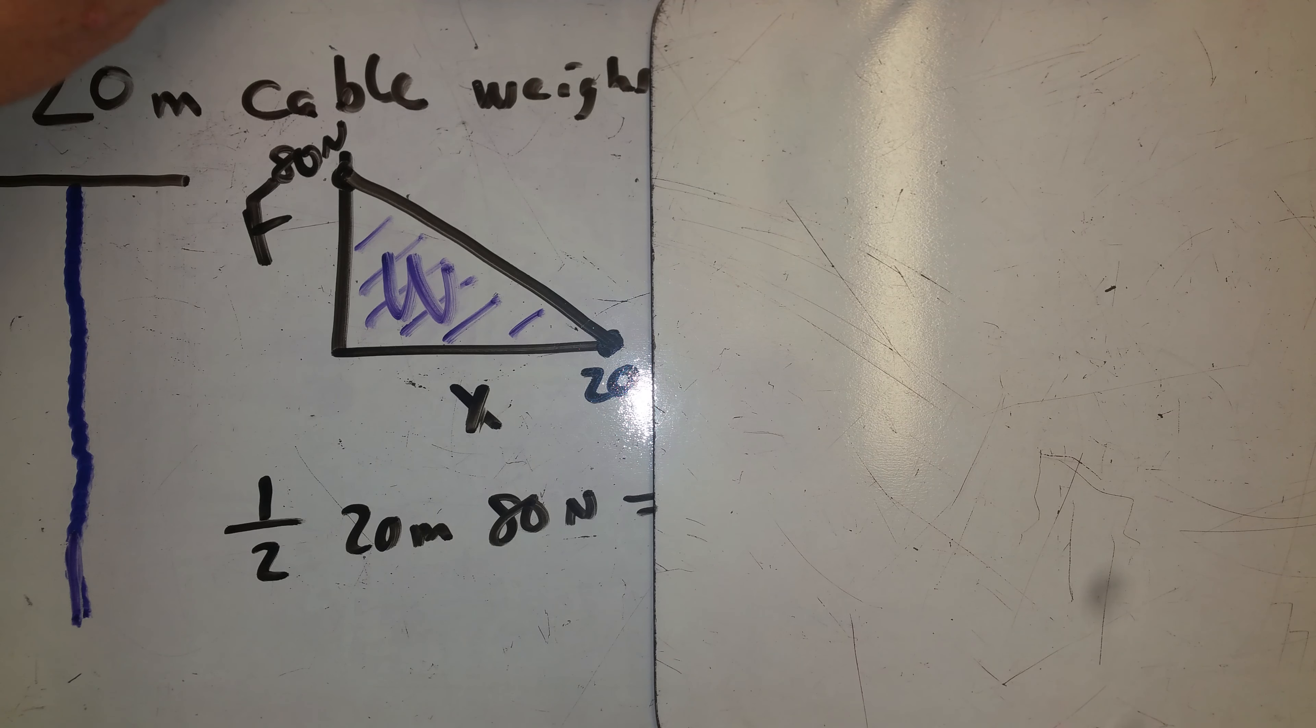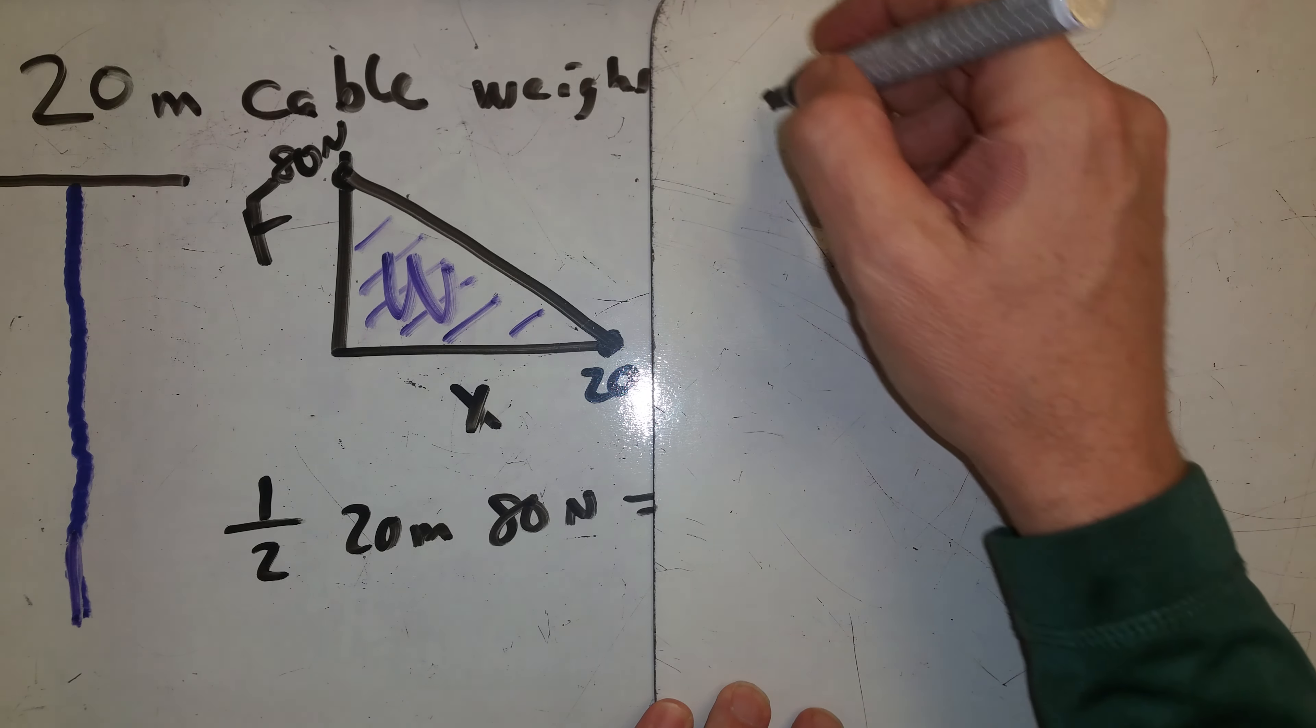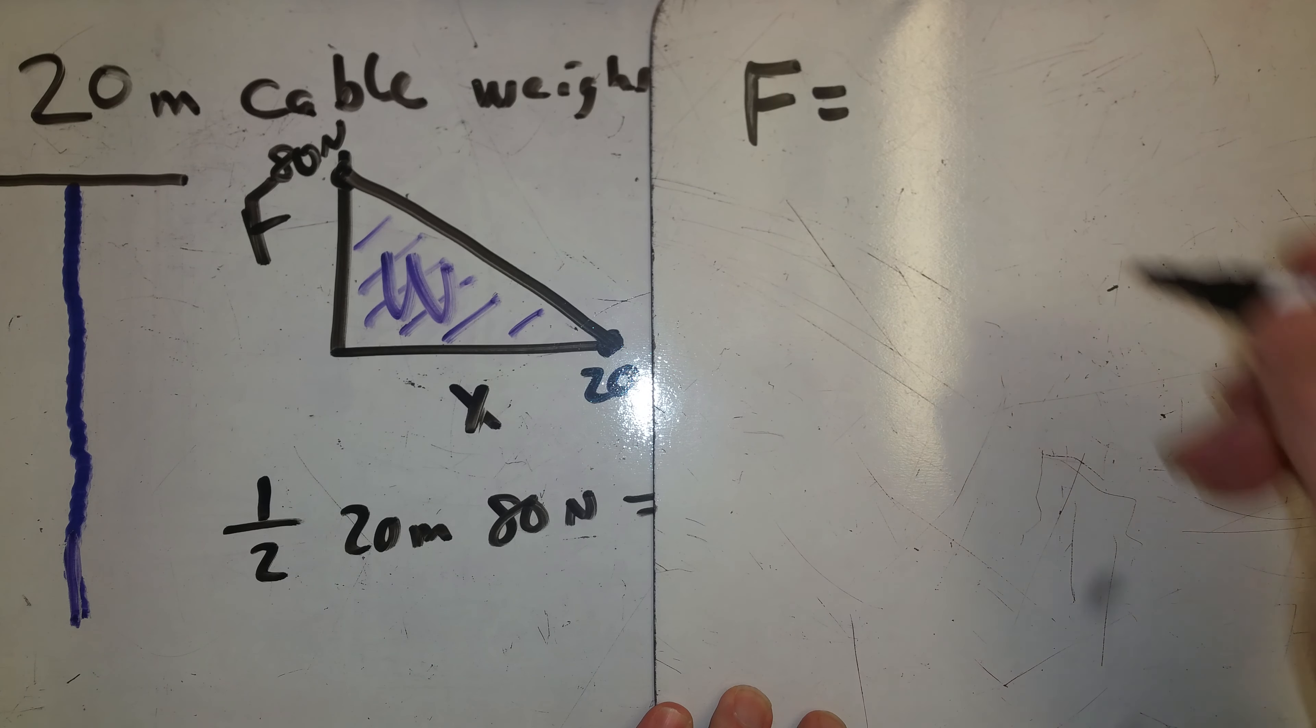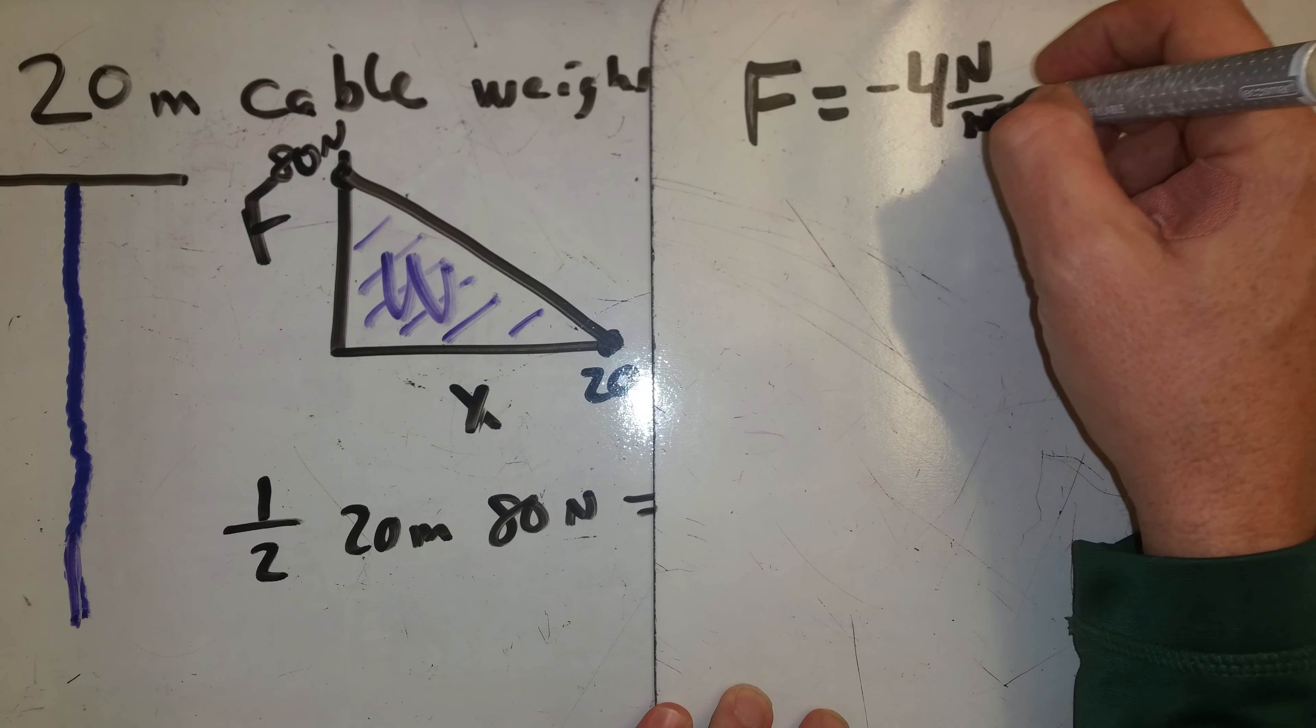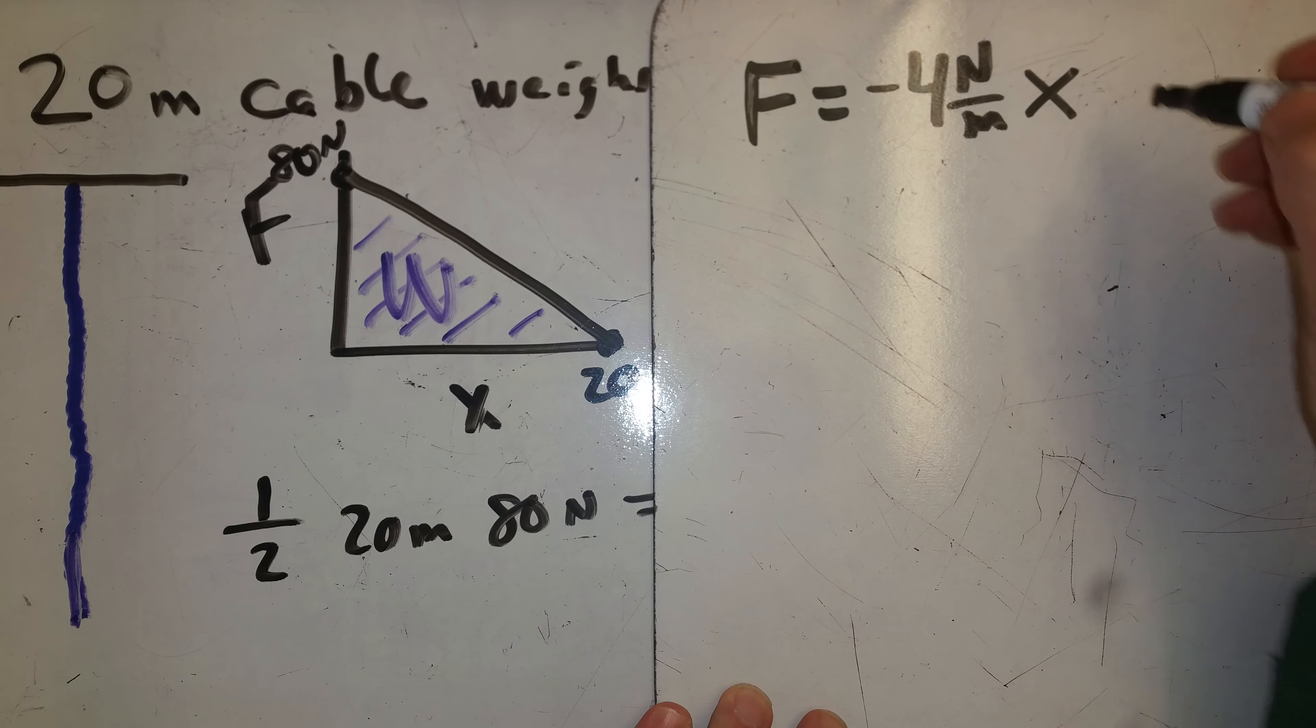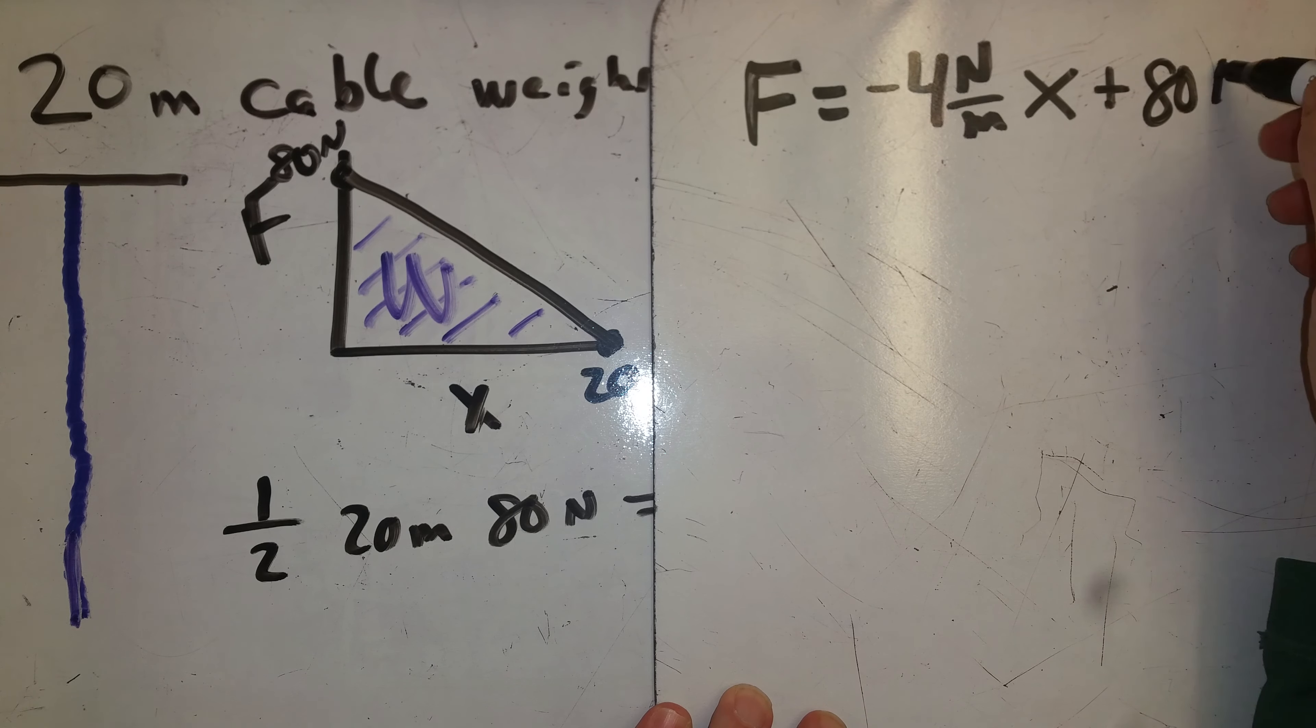We need to generate a function for this, and because it's a straight line we can say it's y equals mx plus b, or y equals the slope, which is negative 80 over 20, negative 4 newtons per meter, times how much I stretch it, that's my x, plus b, my y intercept is 80 newtons. So now I have a function for this.